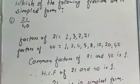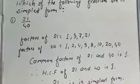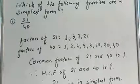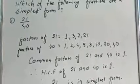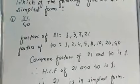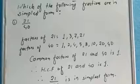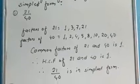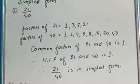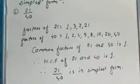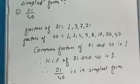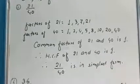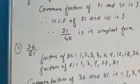That means in dono mein keval 1 hi hai jo common hai. Agar aisa hota hai to iska yeh matlab hua ki in dono numbers ka jo GCF hoga, woh 1 hoga. Aur agar kisi bhi do numbers ka GCF 1 hota hai to woh number simplest form mein hota hai — that means ab woh further divide nahin hoga.